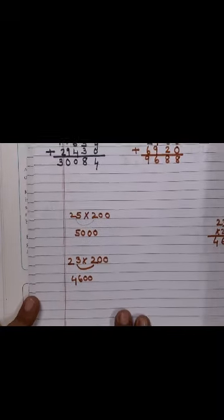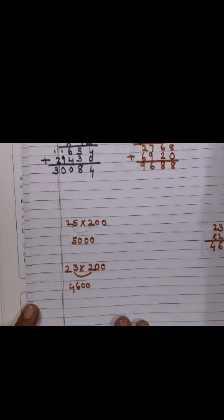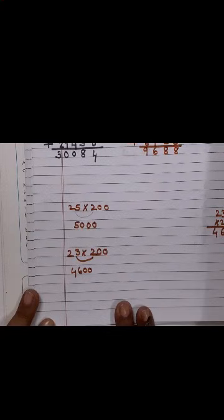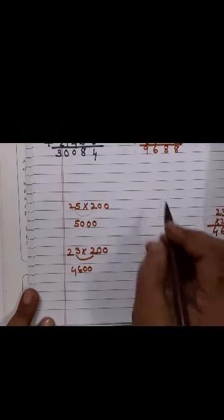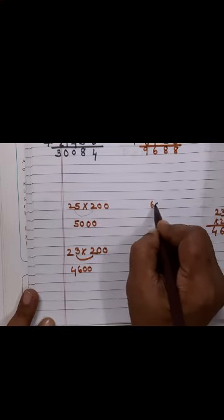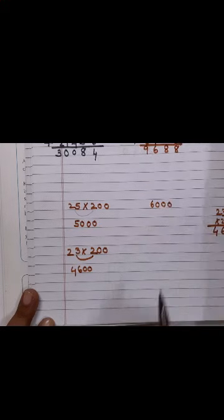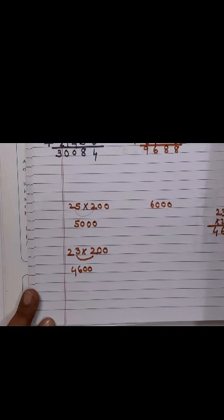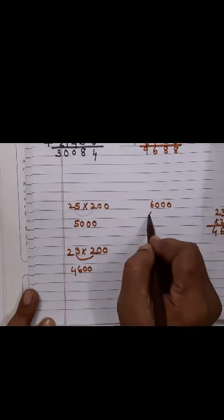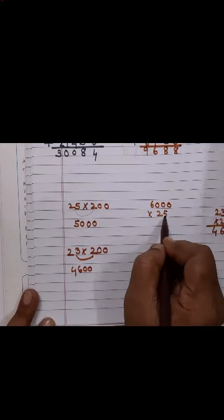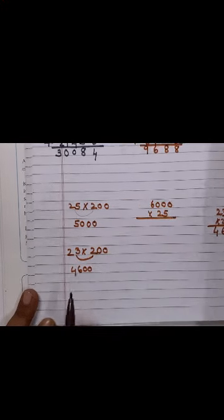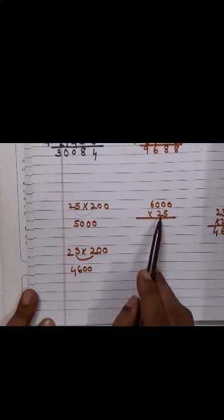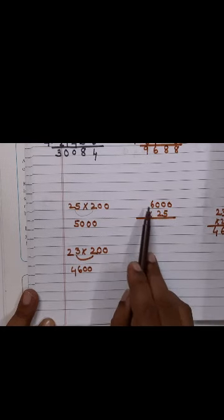Now let's take something a little bit complicated. Let's take a challenging one. How about this children? Let's do it in the vertical method here. 6,000 into 25. Now what you do children? Multiply straight, 25 into 6.